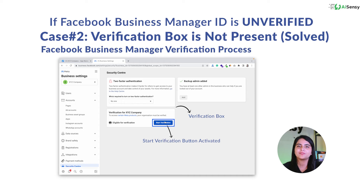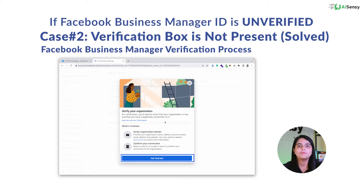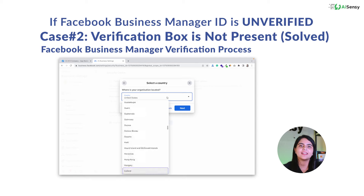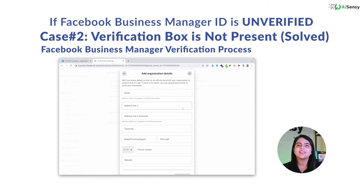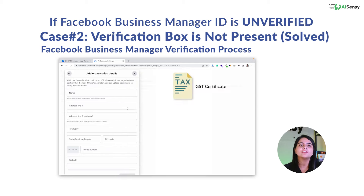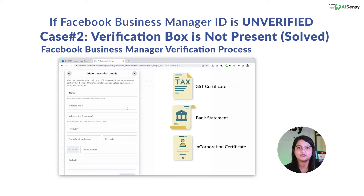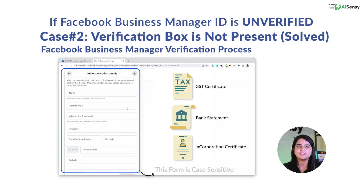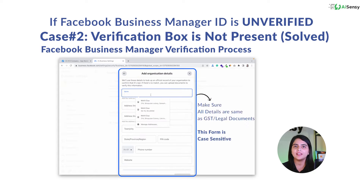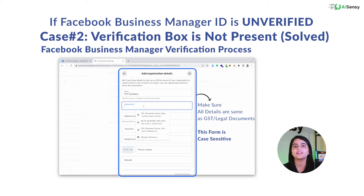Now let's start with your Facebook Business Manager verification process. Once you find the start verification button, click on Start Verification. In the pop-up, click on Get Started. Select your country and click on Next. Now enter the exact details mentioned in the official document — preferably your GST certificate, bank statement, or incorporation certificate. If the document contains uppercase letters, use uppercase letters while typing the business name or address. In the Name field, copy and paste the legal name of your business from the document.